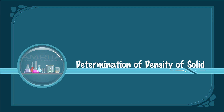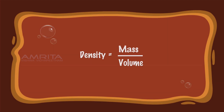Determination of Density of Solid. The density of a solid can be determined using the formula: Density is equal to mass divided by volume.